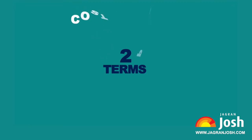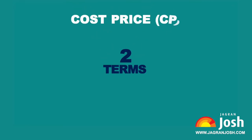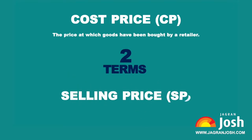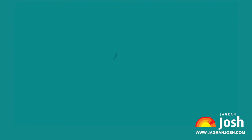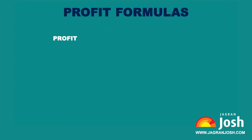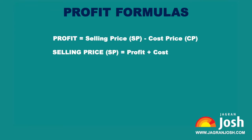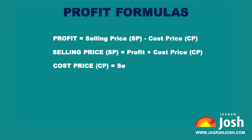They are: Cost Price (CP) — the price at which goods have been bought by a retailer; and Selling Price (SP) — the price at which goods are sold by a retailer. Profit formulas: Profit = Selling Price − Cost Price; Selling Price = Profit + Cost Price; Cost Price = Selling Price − Profit.